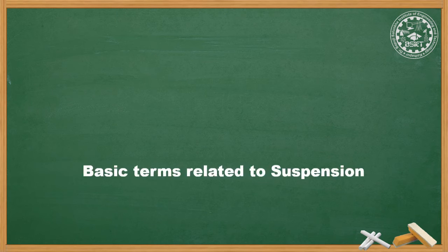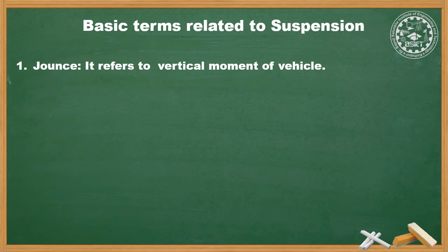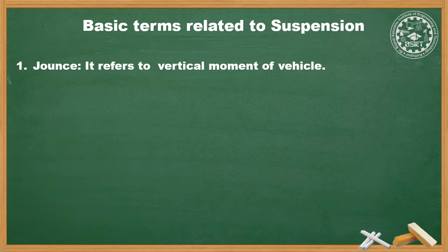Let us see some basic terms related to the suspension system. The very first term is jounce. Jounce refers to the bounce or vertical upward movement of a vehicle suspension when it comes across a bump or shock in the road. A bump is nothing but a speed breaker.